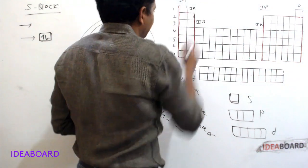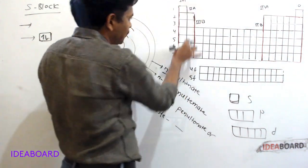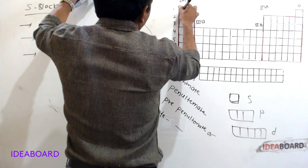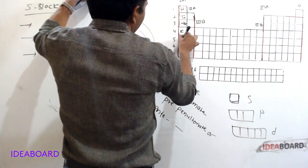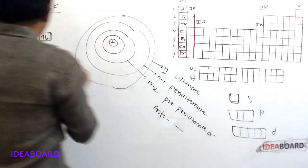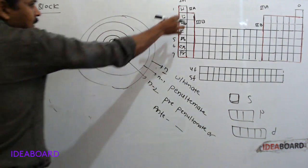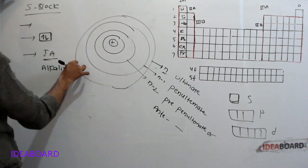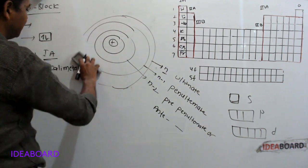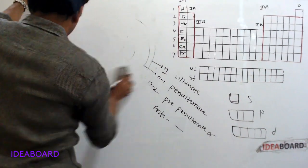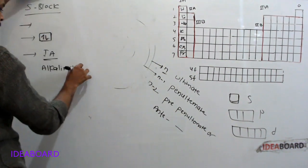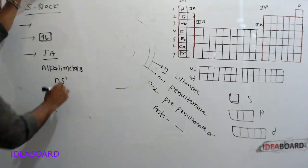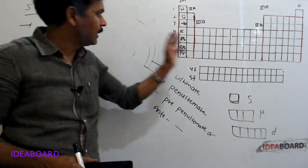The two groups of S block are group 1A and group 2A. First A group elements are hydrogen, lithium, sodium, potassium, rubidium, cesium, and francium. Their general valence orbit electronic configuration is Ns1.